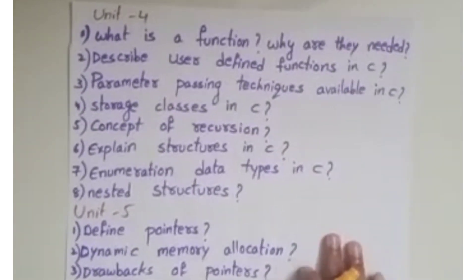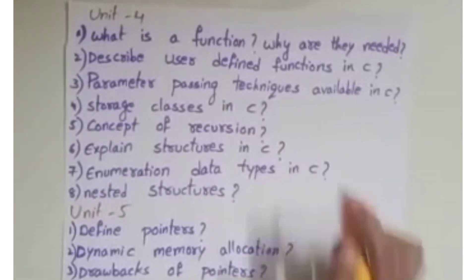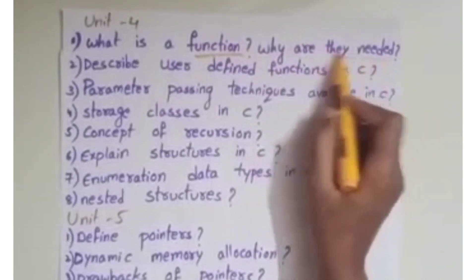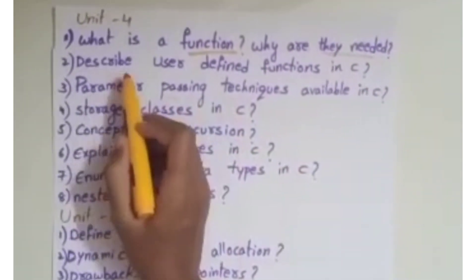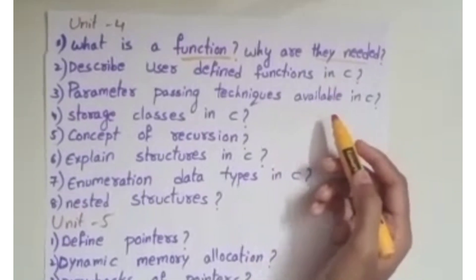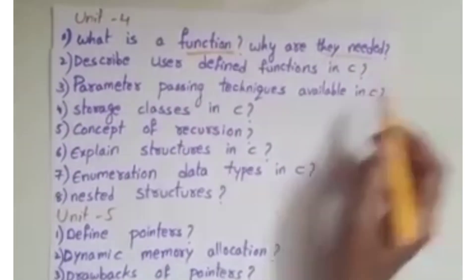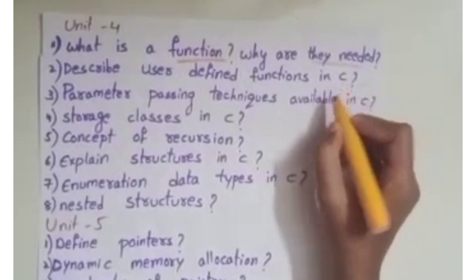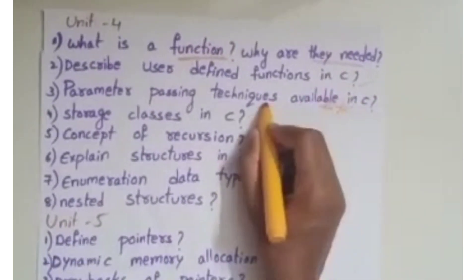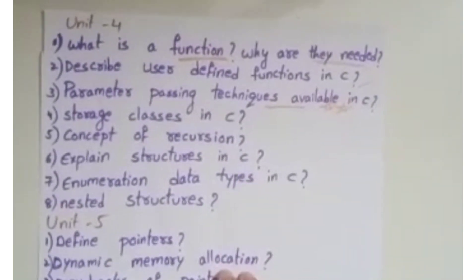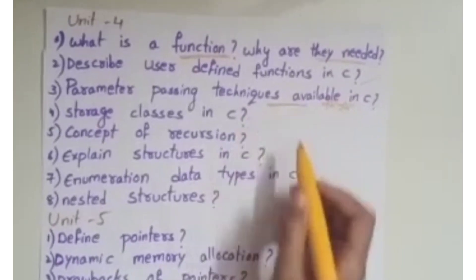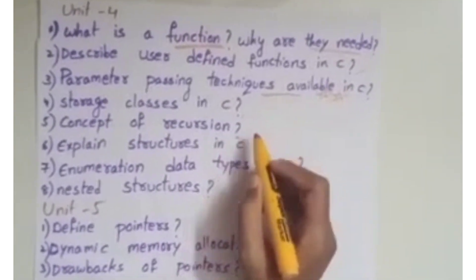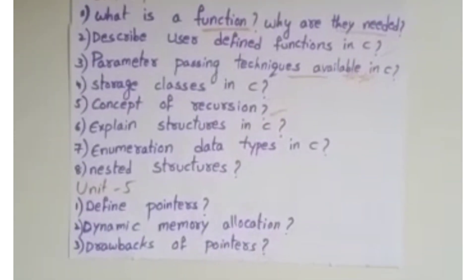Unit 4: What is a Function — why are functions needed? This is a question. Describe User Defined Functions in C. Parameter Passing Techniques available in C — very, very important question, be well prepared. Storage Classes in C, and the Concept of Recursion — this is also important.